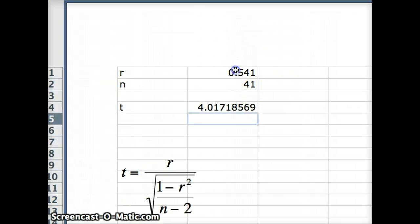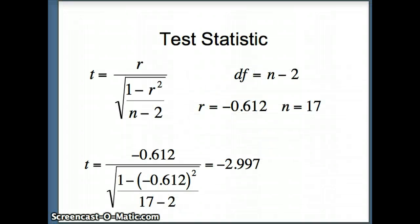So we have negative 0.612, and we have an N of 17, and we get that value. So we have our test statistic.